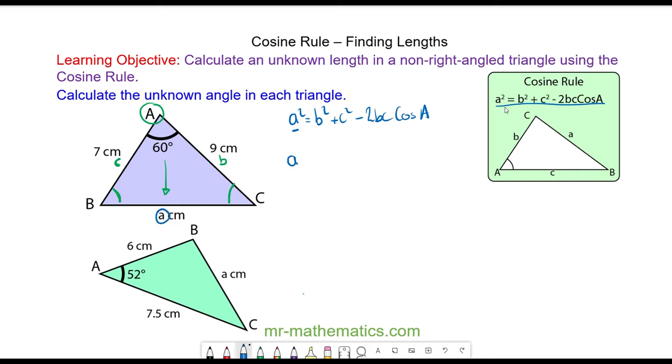So a squared is equal to b squared which is 9 squared plus c squared which is 7 squared minus 2 times b times c times cos of angle 60 degrees which is angle A.